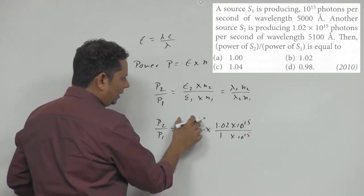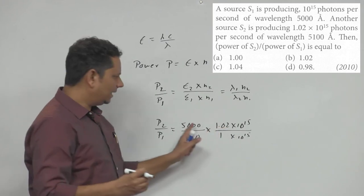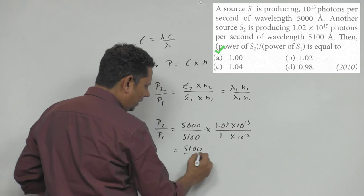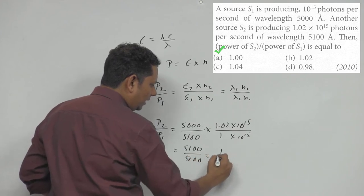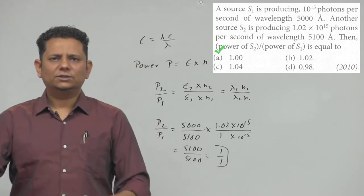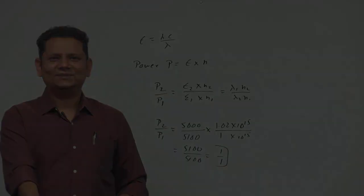Now when we multiply this, n2 is actually 2% more, so this also becomes 5100 on top.